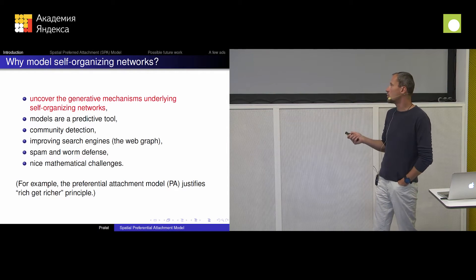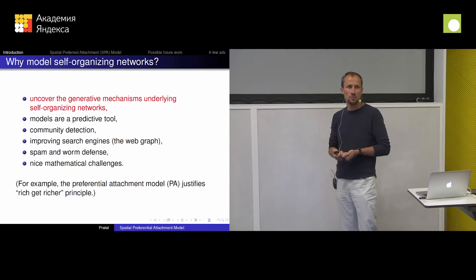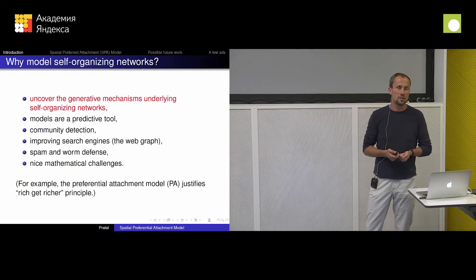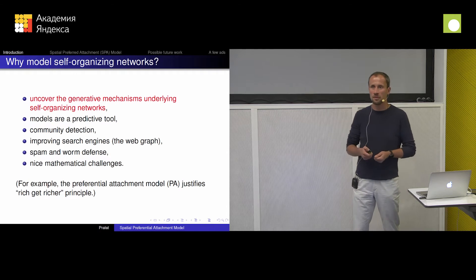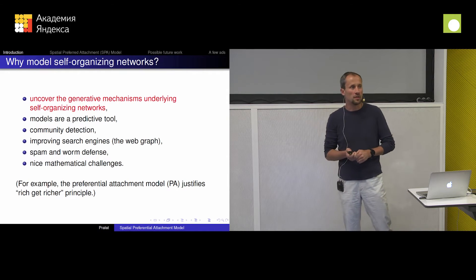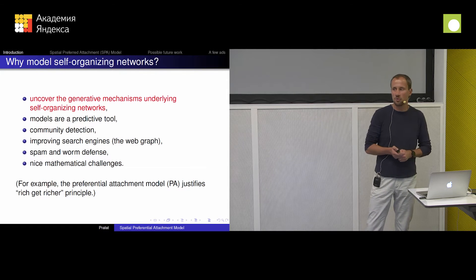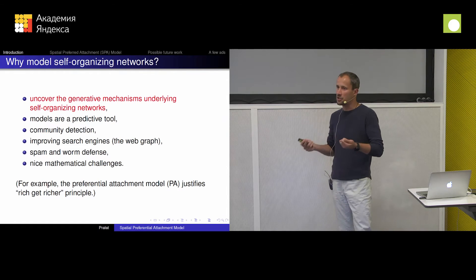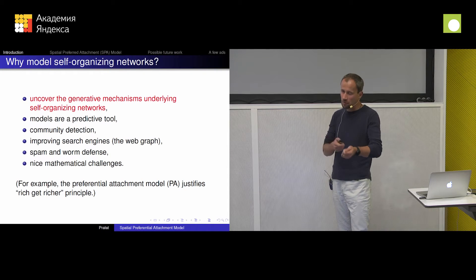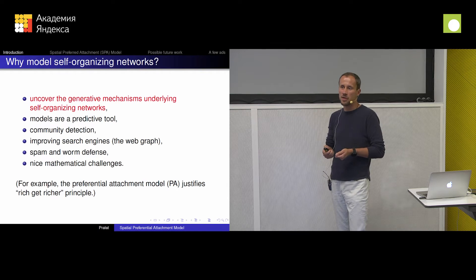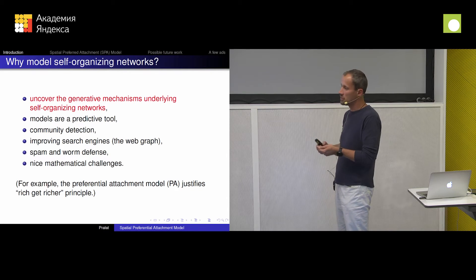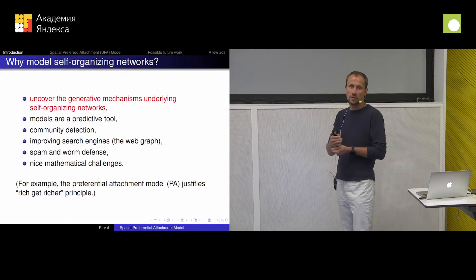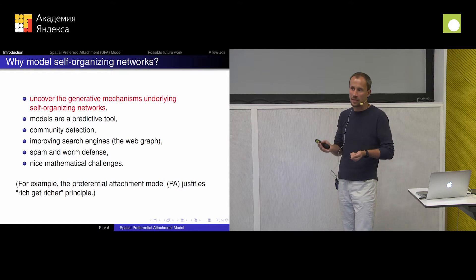For example, people were wondering initially why we have power law degree distribution in these networks. If you sit with a piece of paper and try to do some calculations, it's much more natural to expect, say, exponential decay instead of power law. So if you put a graph at random and connect nodes at random, then by pure randomness you wouldn't have nodes with high degree — that's just highly unlikely.